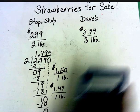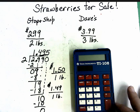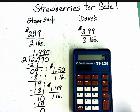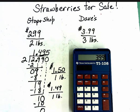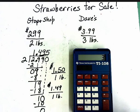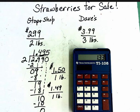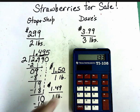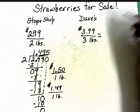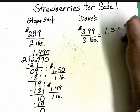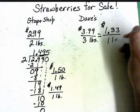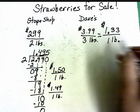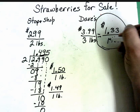Now I'm just going to do Dave's on the calculator — you are allowed to use a calculator for these problems. So I'm going to have $3.99, and what am I going to do with that $3.99? Divide it by three. So once I divide it by three, how much money is that? $1.33. So this means that this price is $1.33 a pound. Now I can compare these two prices and I can see which one is the better deal. This simplifies to $1.33 per pound.